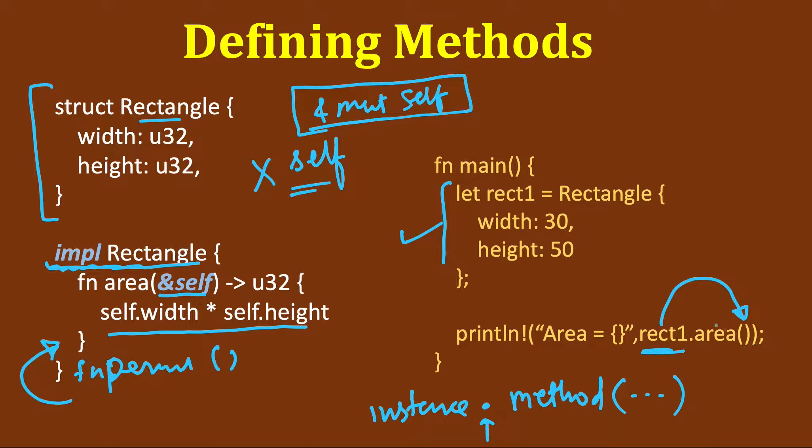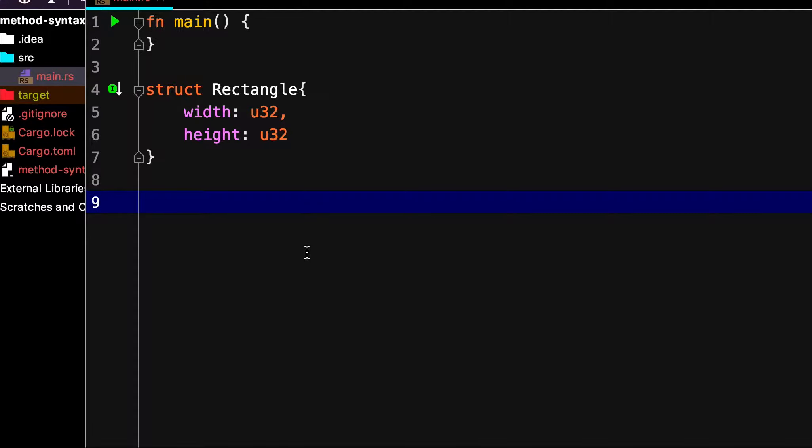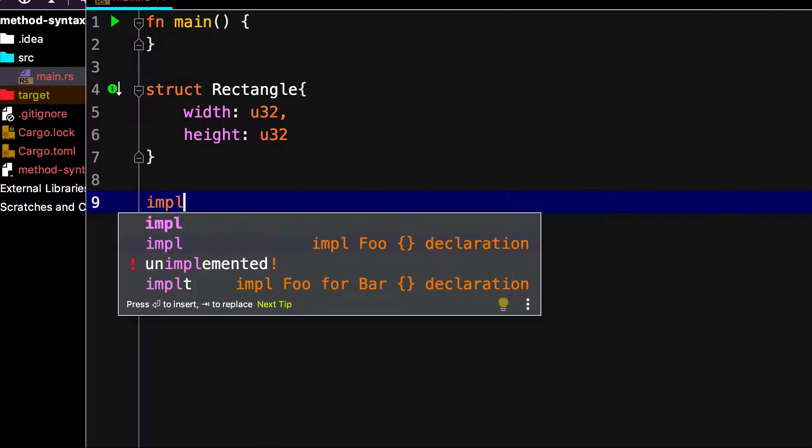So this is the way to call it. Let's see it in the code. So I have defined the rectangle here, the struct. And now let's define the impl block.